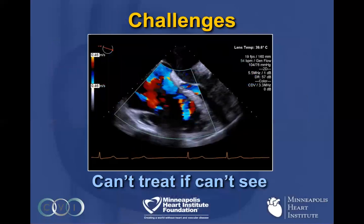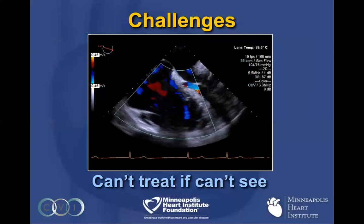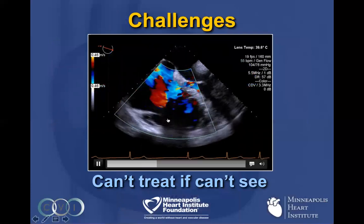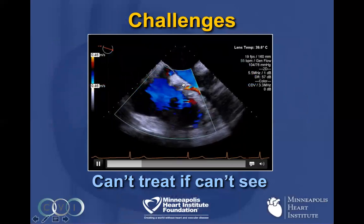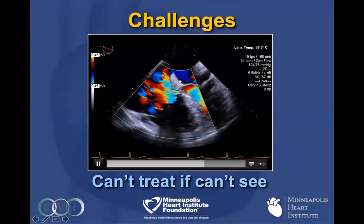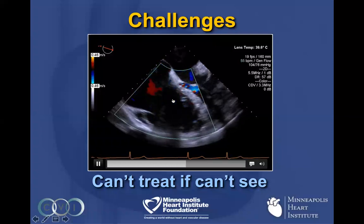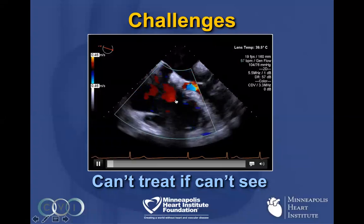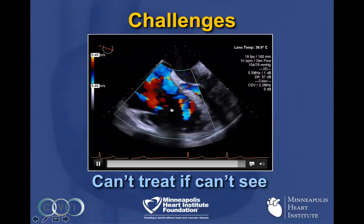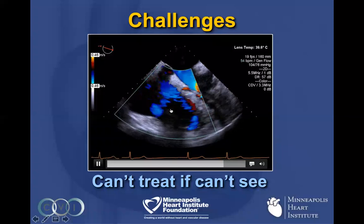Another challenge with this therapy is that you simply cannot treat what you cannot see. Sometimes you get a nice view of the color and there's no question about the severity of the TR, but because of a very large fat limbus, you cannot see the leaflets. This shadowing from the TEE probe makes it impossible to determine whether or not the leaflets are inserted in the MitraClip device.